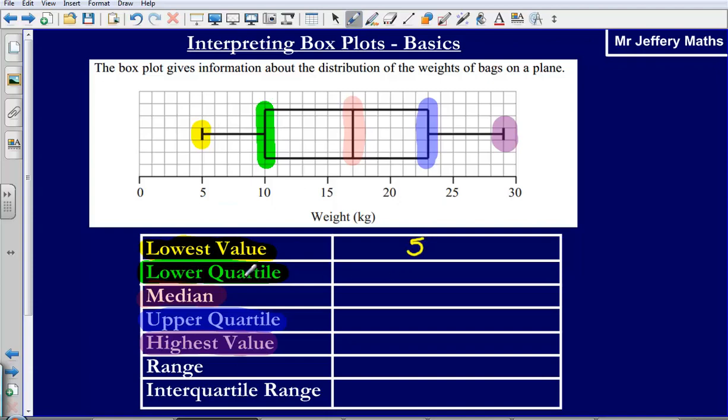Our lower quartile is simply going to be 10. Our median, so our median is where this line here is in the middle of the box, that's going to be 17.